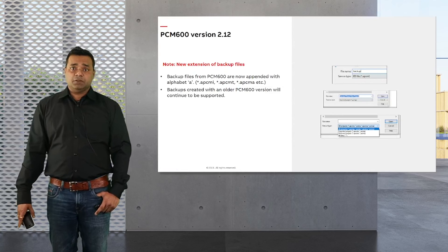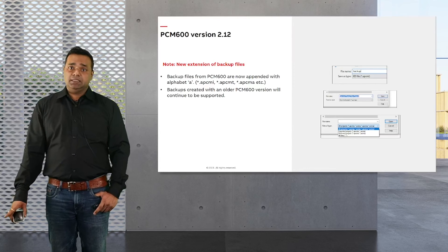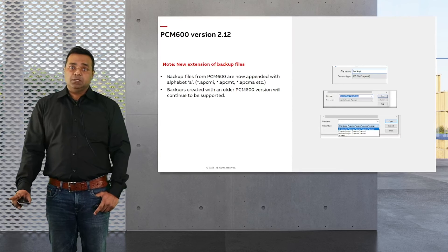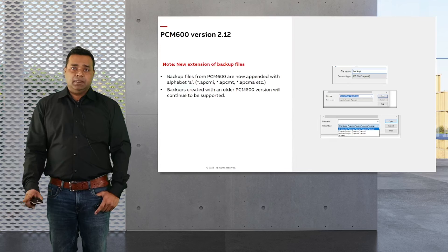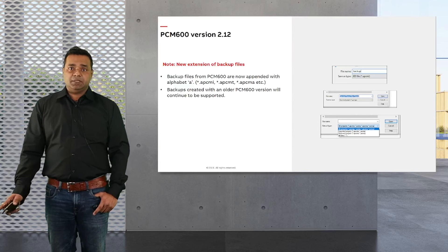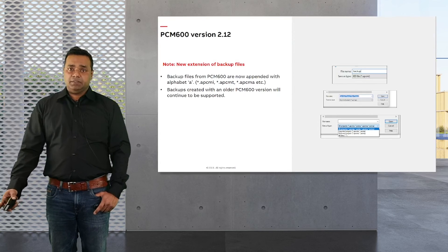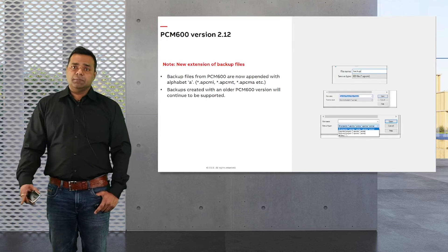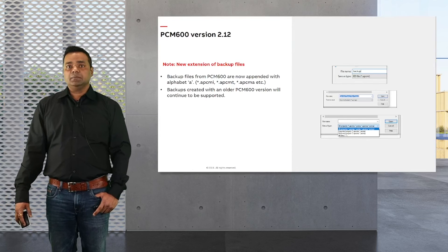From PCM 600 2.12 onwards, there is a change in the extension of backup files created by PCM 600. An additional alphabet 'A' is appended to the backup files — for example, APCMI, APCMA, APCMT. The backups are appended with this extra 'A'. However, backups created with previous PCM 600 versions are still supported.